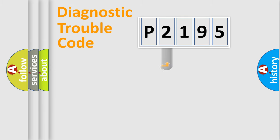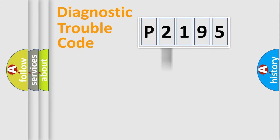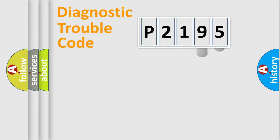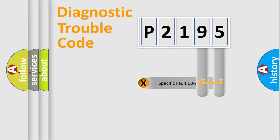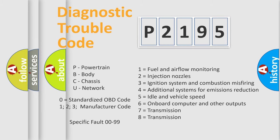This distribution is defined in the first character of the code. If the second character is expressed as zero, it is a standardized error. In the case of numbers 1, 2, or 3, it is a more specific car-specific error expression. The third character specifies a subset of errors. The distribution shown is valid only for the standardized DTC code, and only the last two characters define the specific fault of the group. Such a division is valid only if the second character code is expressed by the number zero.